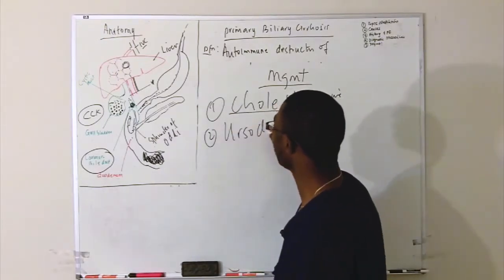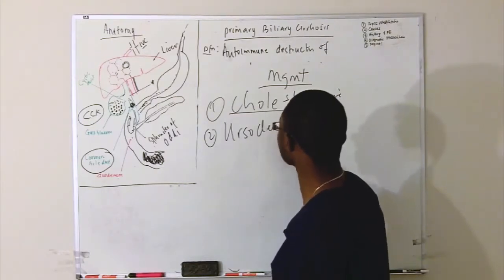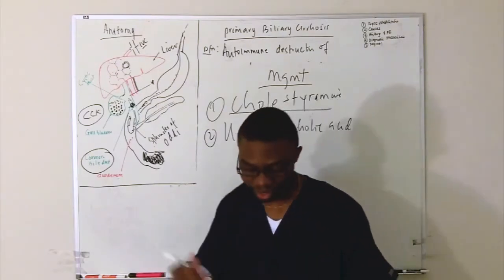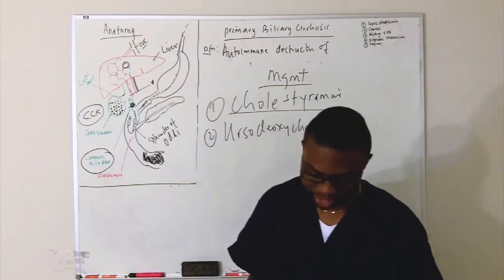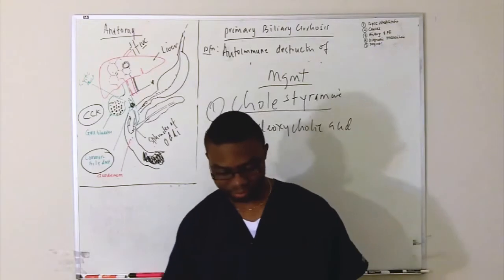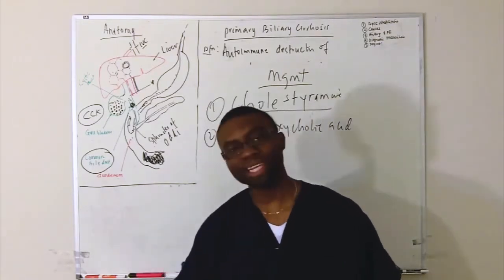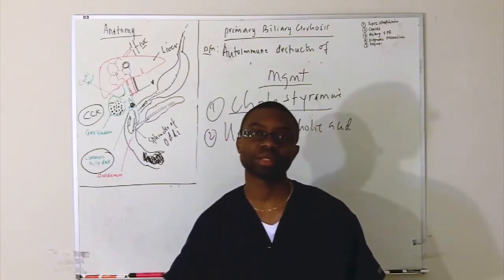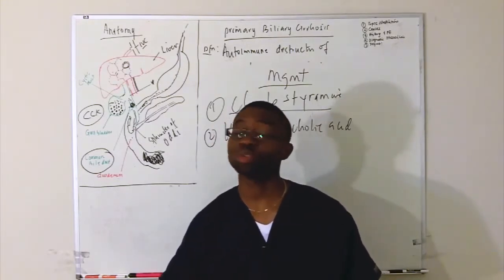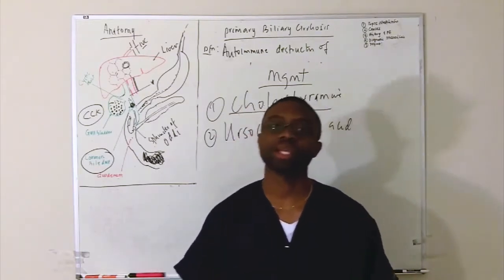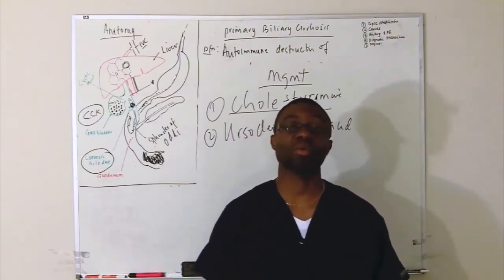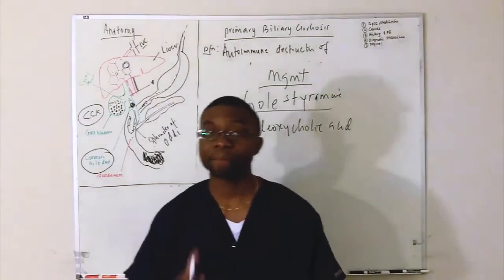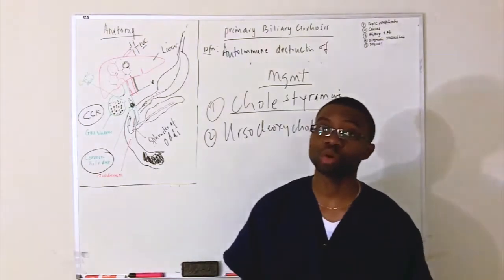We give another treatment, ursodeoxycholic acid. That's another medication we give for this patient and it's kind of a hydrophilic bile acid. It slows the progression of the disease. At the end of the day, the prognosis for this patient is really bad. We're going to have to do a liver transplant. That's the most we can do. So we have to put this patient on the liver transplant list so they can get a new liver and that's the only way we're going to get the disease out of the way.